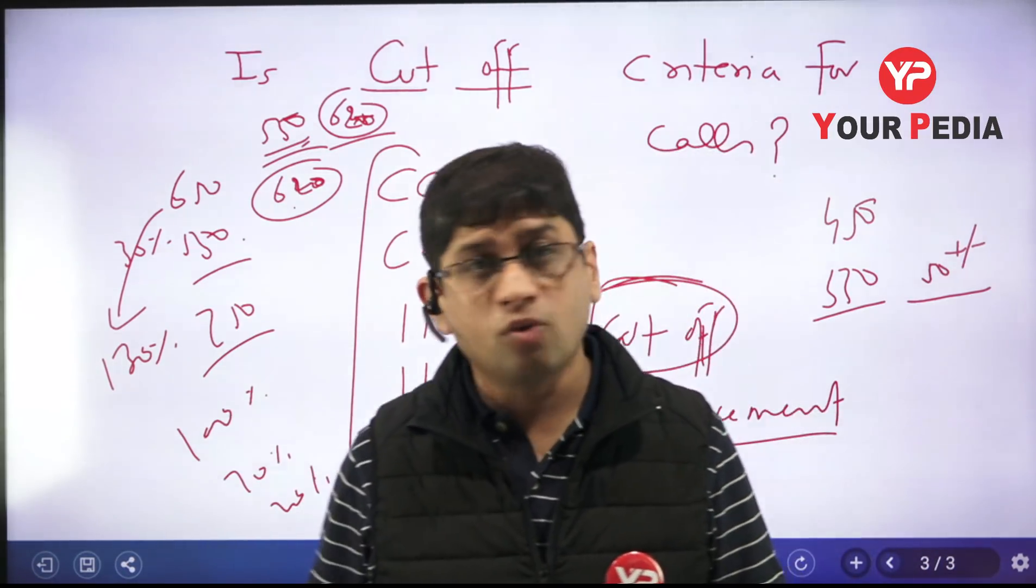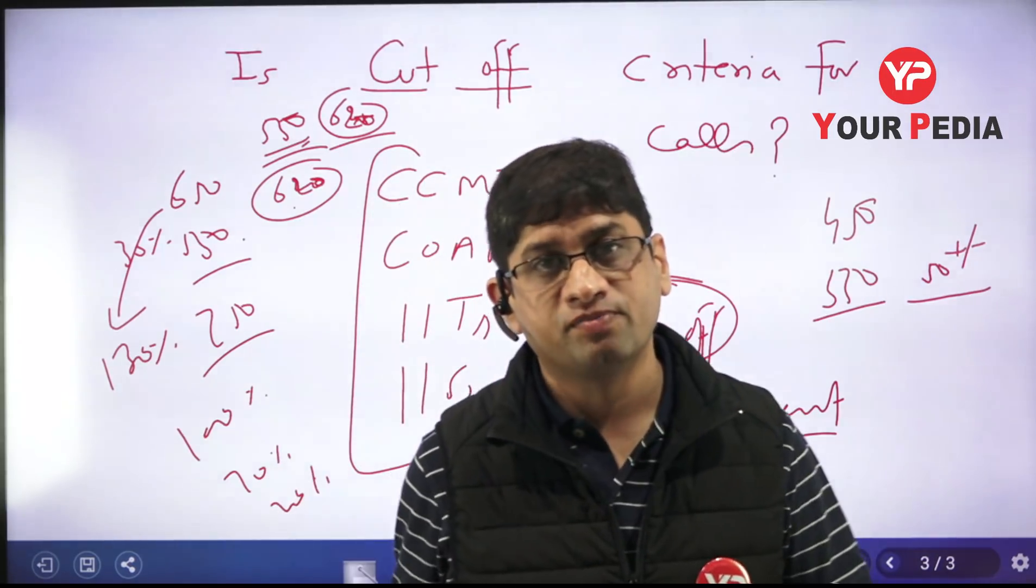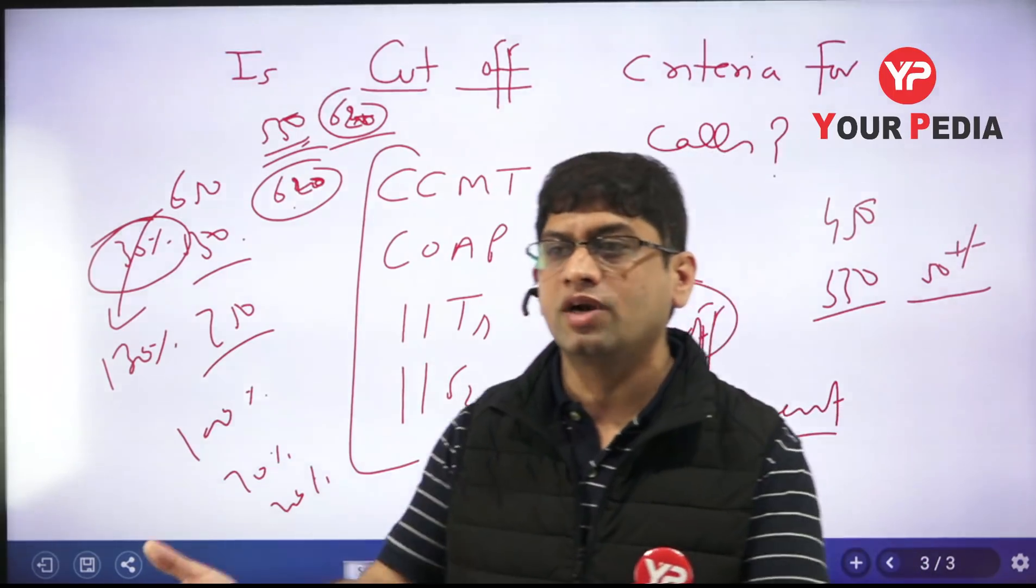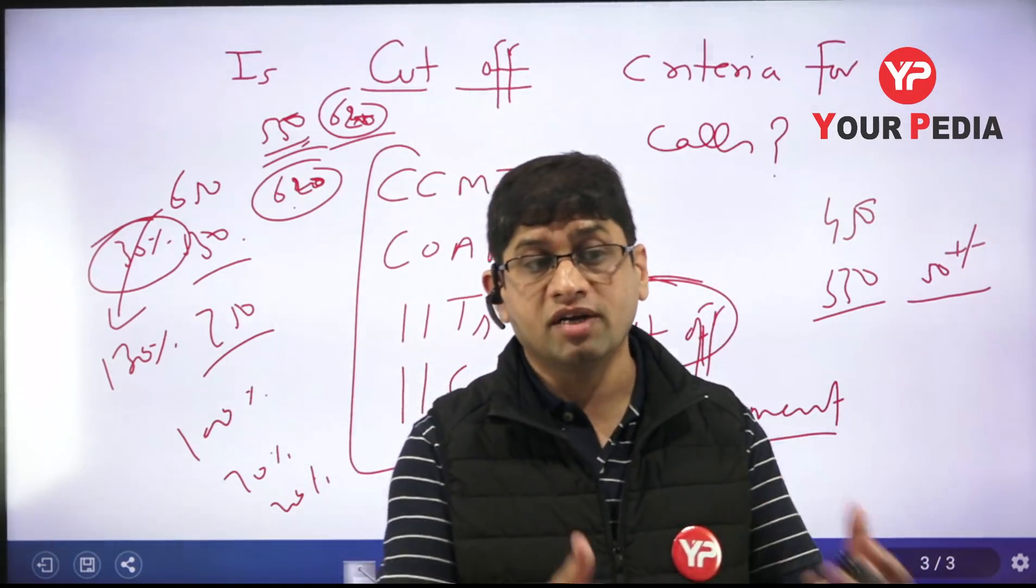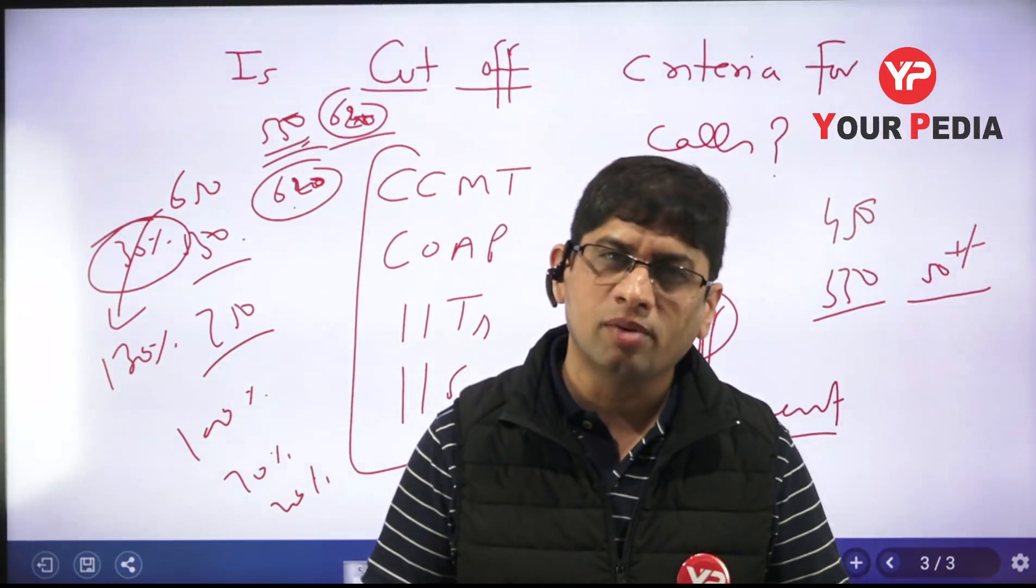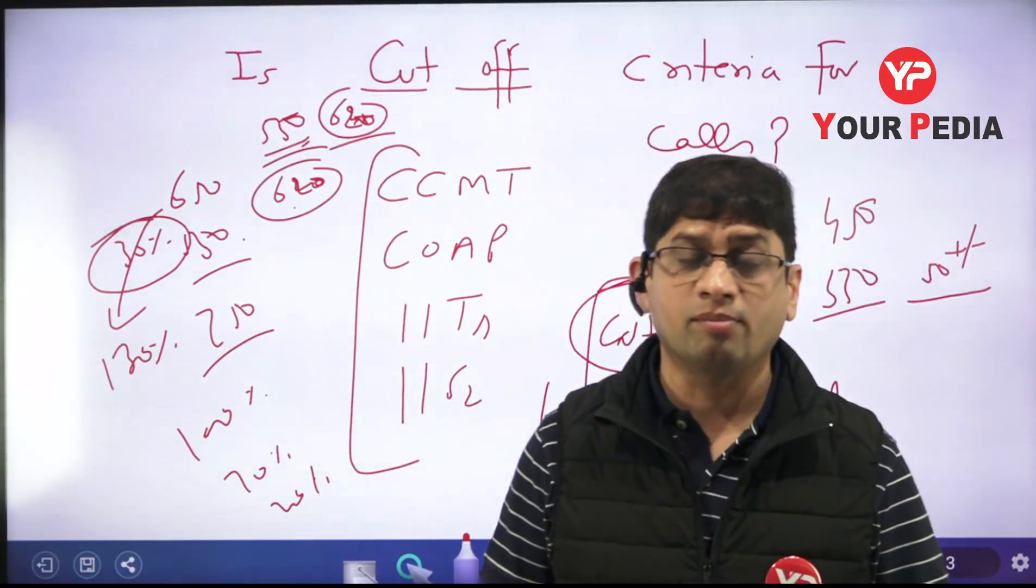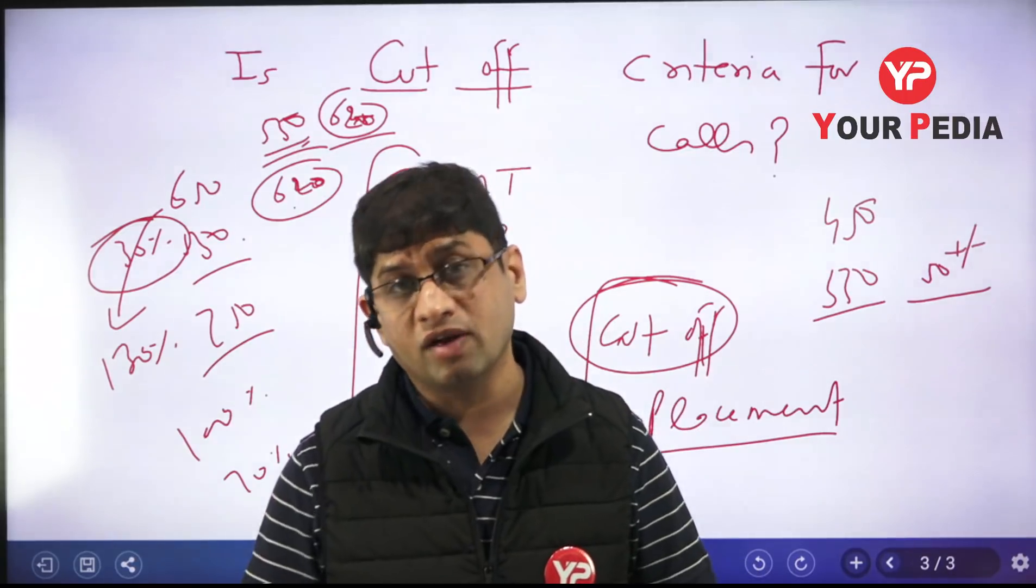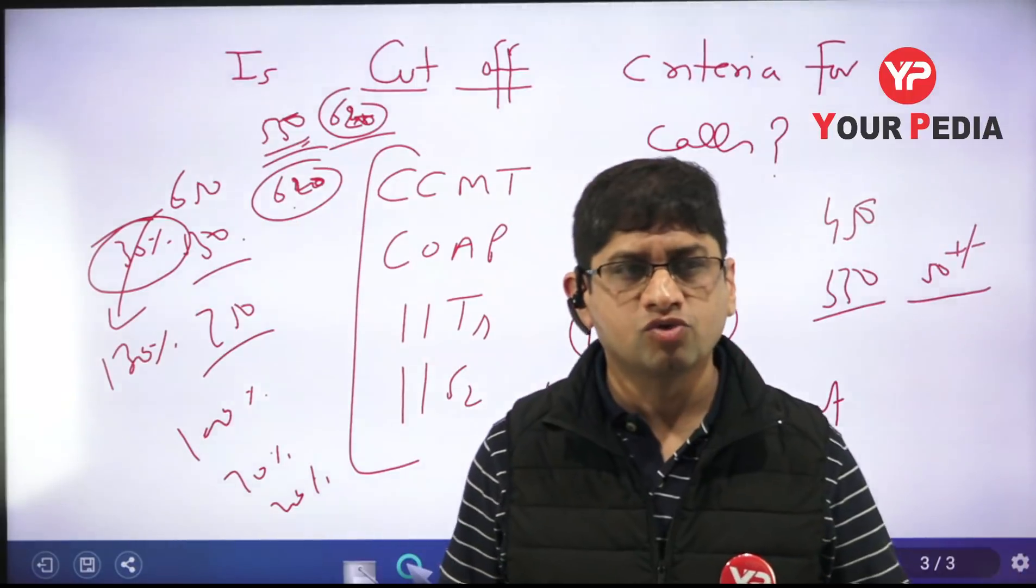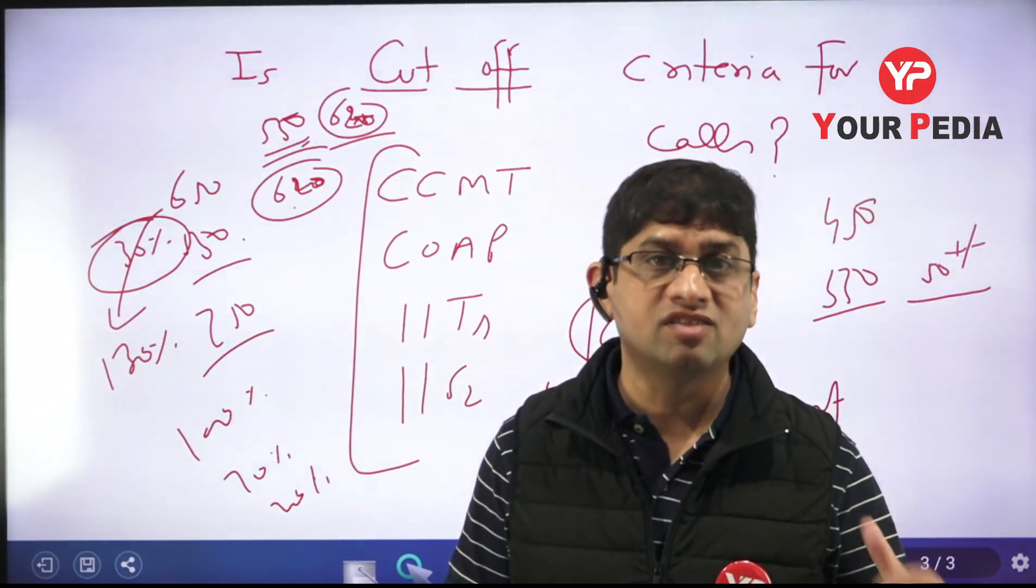You know this 30 percent can become 130 percent or 100 percent next year, or 100 percent placement can become 70 percent or 20 percent next year. Placement has huge variation. The reason why placement is 40 percent may not be the course, it may be the students sitting in the class because they were not interested, they went out, they got some other jobs, they don't want campus placement jobs, or they did not prepare well.